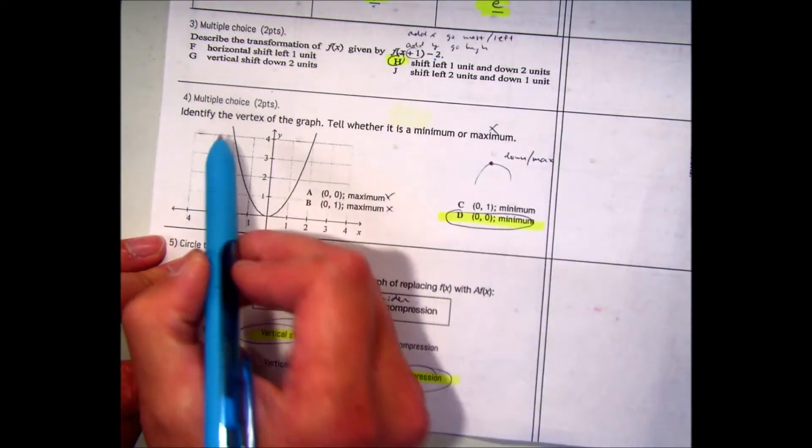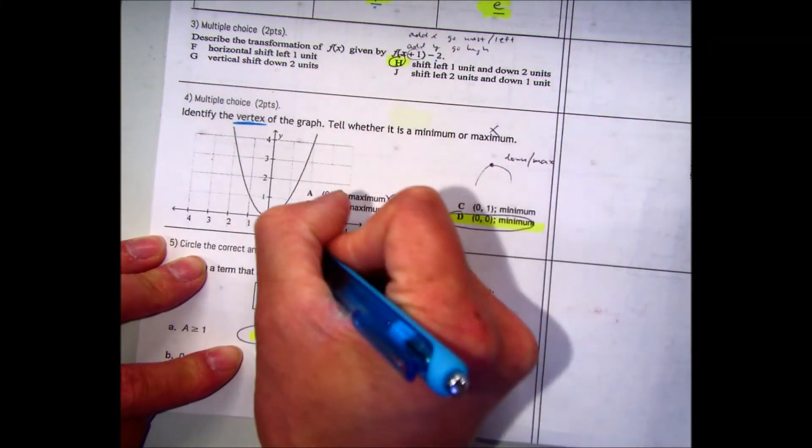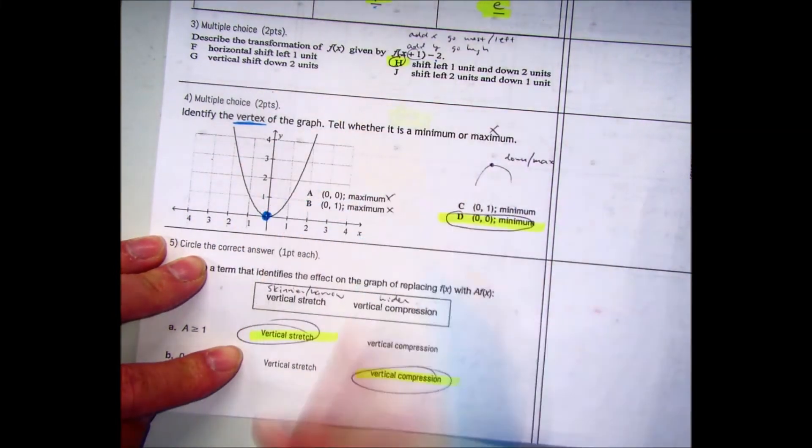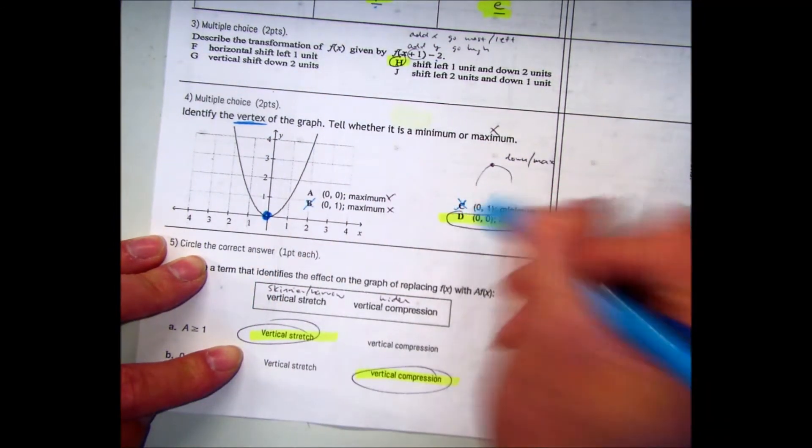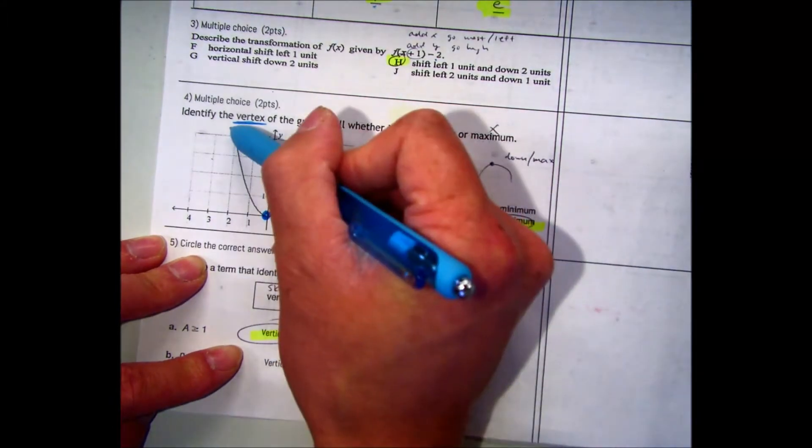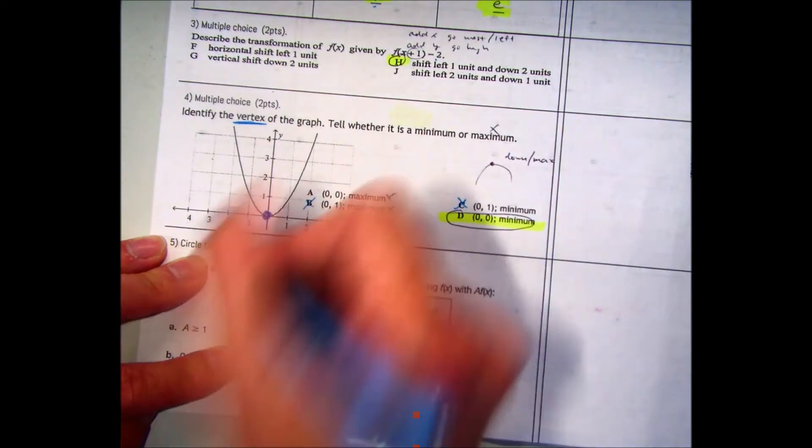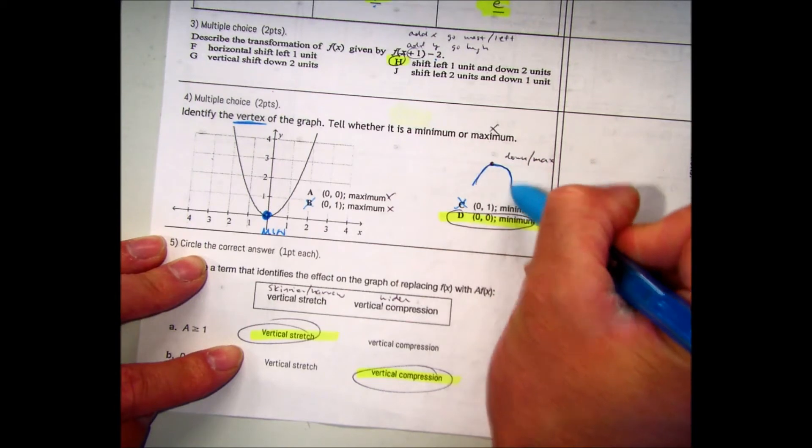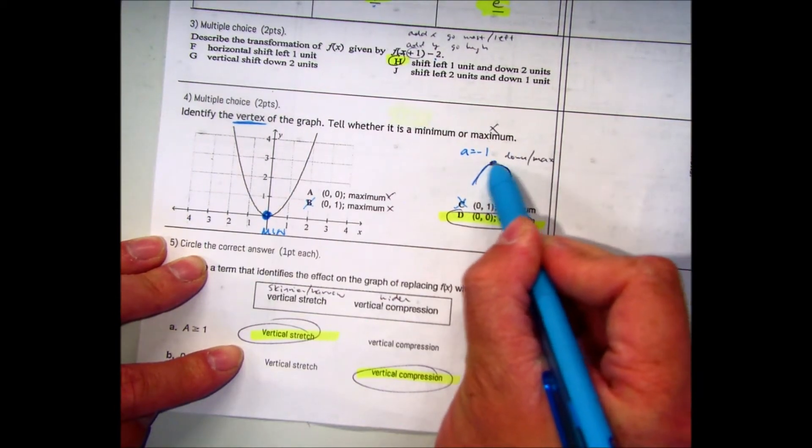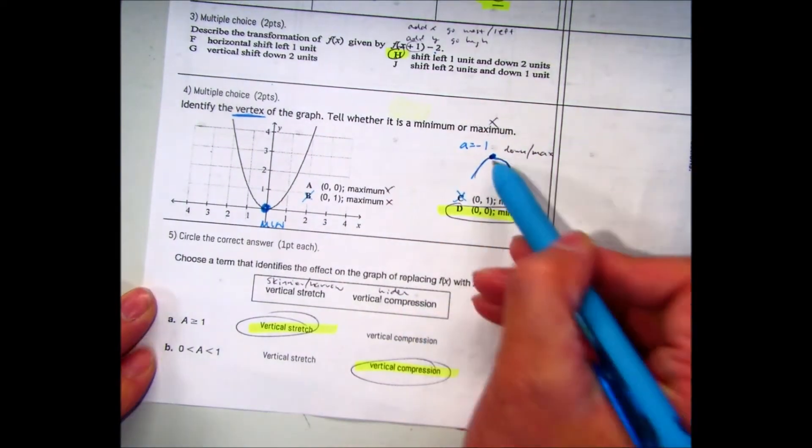Question number 4. Identify the vertex of the graph. Tell whether it's a minimum or a maximum. The vertex is either the lowest or highest point of your parabola. That would be right here. That has an ordered pair of the origin. So you can't pick B and you can't pick C. It would have to be either A or D. Now, because this graph is opening up, this is the minimum. So that would be D. Maximum is if it's pointing down, right? Your a value is negative. This would be a maximum. If you threw a football at its highest point, that would be your vertex.